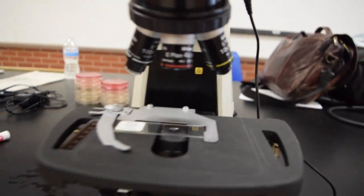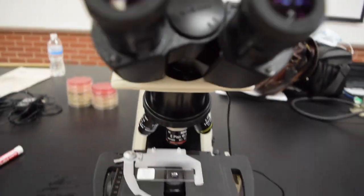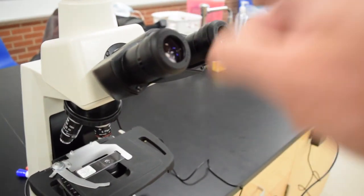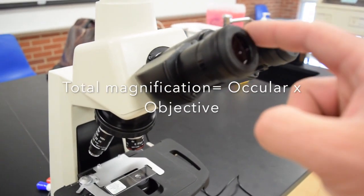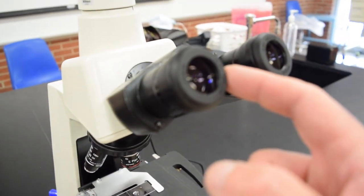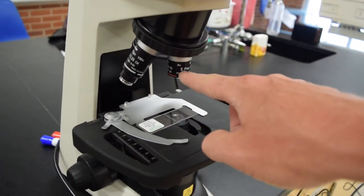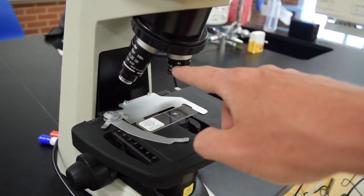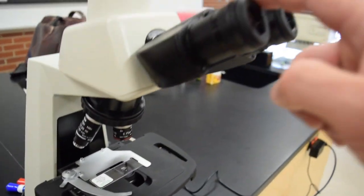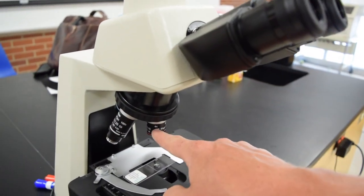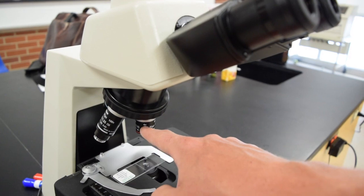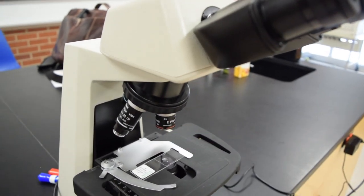Here we have the objective lenses and the ocular lenses. To get the total magnification, we use 10x magnification for the oculars and multiply that by the objective number. So this is a 4x objective: 10x times 4x equals 40 times magnification. The specimen is 40 times magnified.